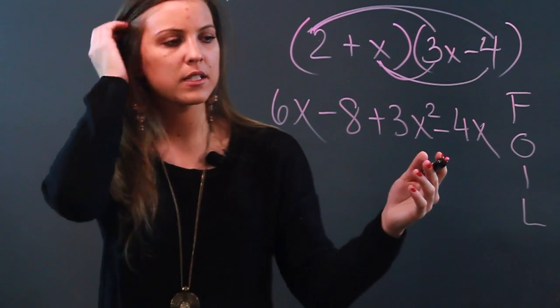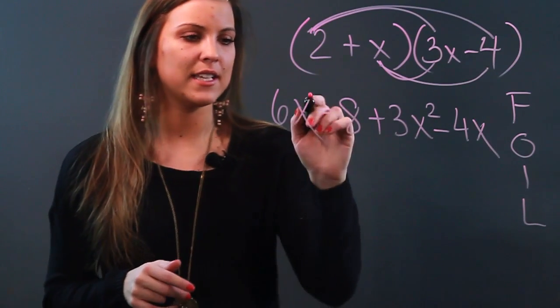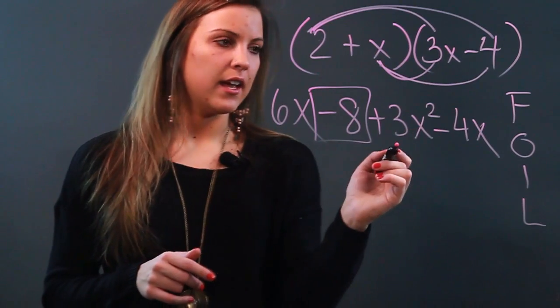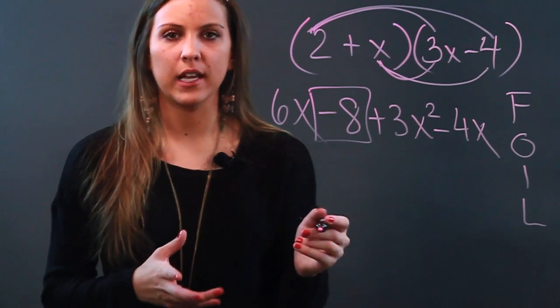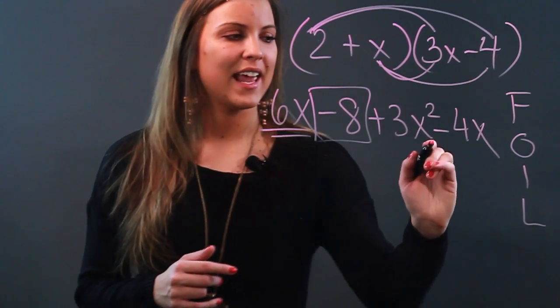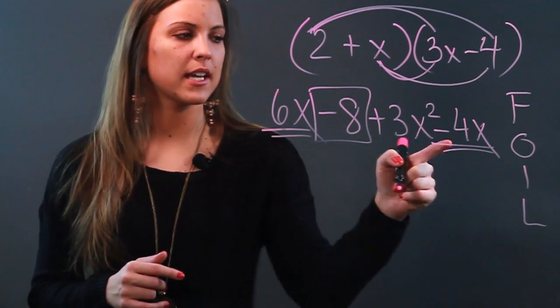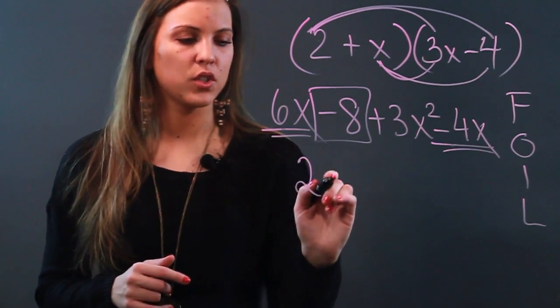Now we've expanded the product, but we have to simplify it because I see that 6x and negative 4x are like terms. So I can combine them. So I have 6x and I have negative 4x. So when I do 6x minus 4x, I get 2x.